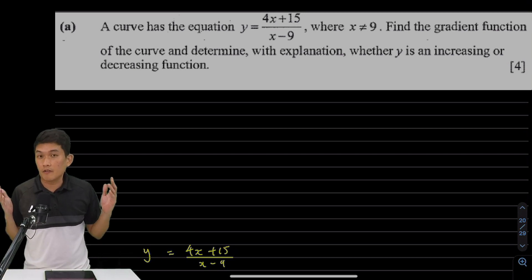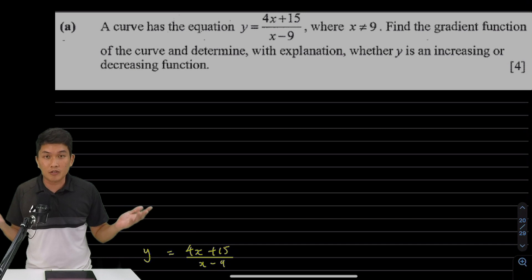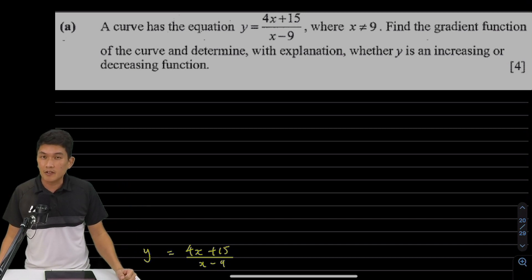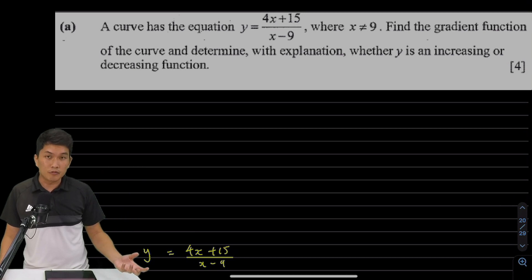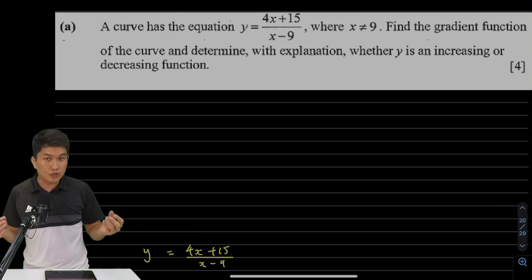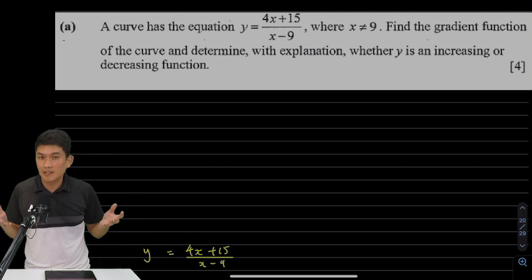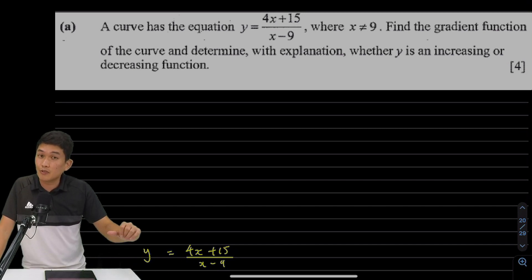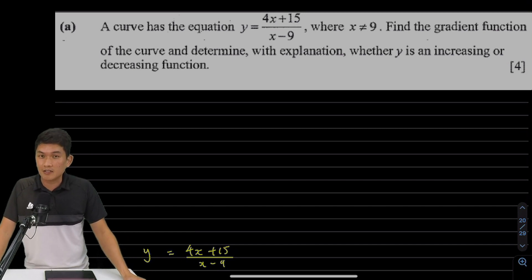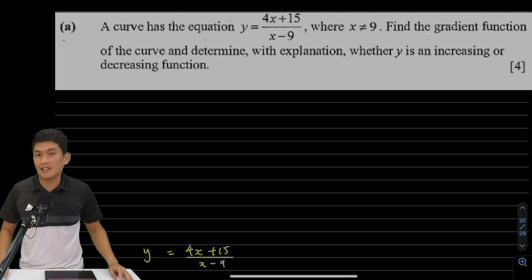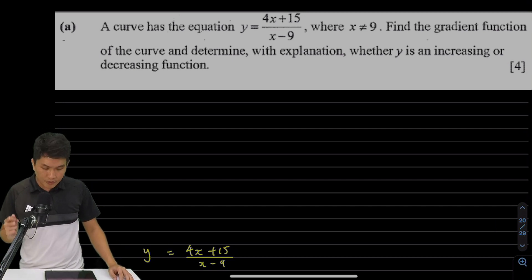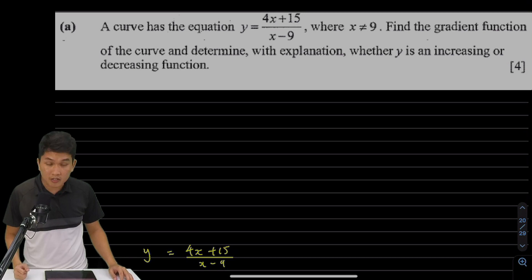First of all, you need to think of a function. A function is very simply just a machine — if you feed in an input, it gets an output. Now a gradient function is a machine that tells you the gradient. So what you do is put in values of x, and it tells you what the gradient is at that value of x. Isn't that what dy/dx does? When you substitute different values of x into dy/dx, you get the gradient at that exact point. So the gradient function in this question is just dy/dx.